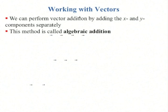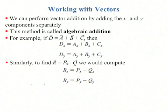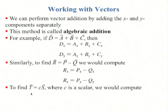When you're working with vectors, you can use regular algebraic addition on the components. If you have d vector is a plus b plus c, then the x component, d sub x, is equal to the sum of the x components of all these vectors. Similarly, d sub y equals a sub y plus b sub y plus c sub y. If you want to subtract two vectors, r equals p minus q, you can use that tip-to-tail rule using p plus negative q, or you can just use the components: r sub x equals p sub x minus q sub x, and r sub y equals p sub y minus q sub y. If you want to multiply by a scalar, t vector equals c times s vector, just take that scalar and multiply it times each of the components.